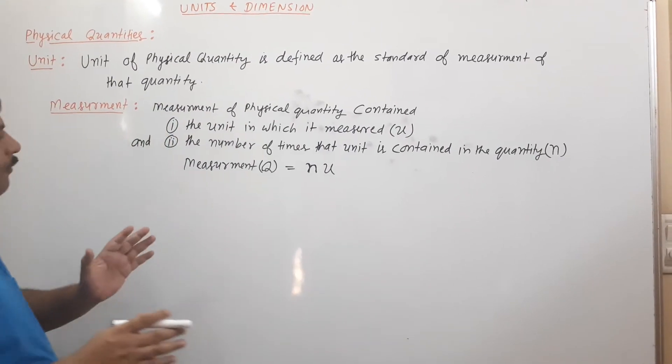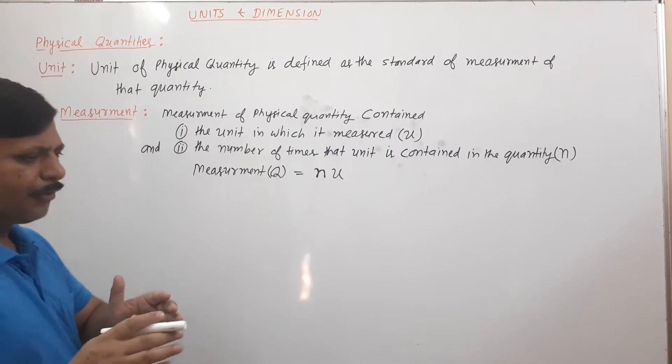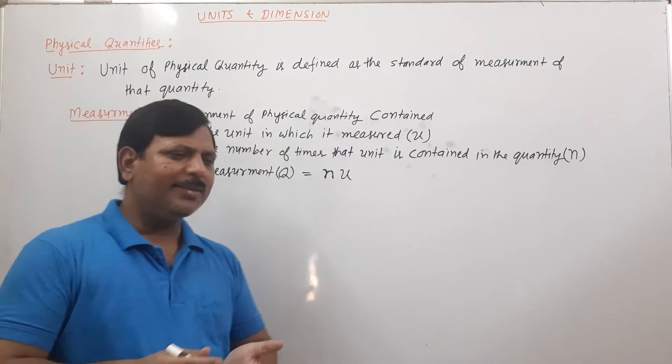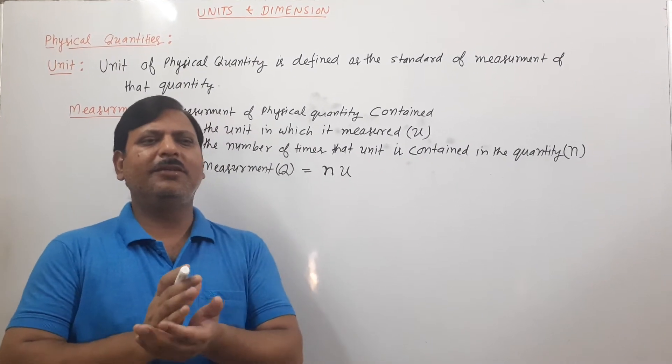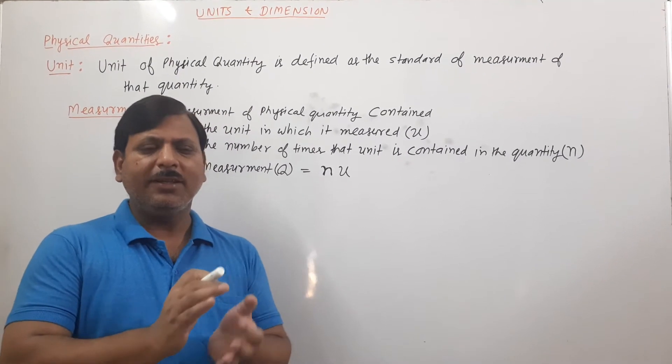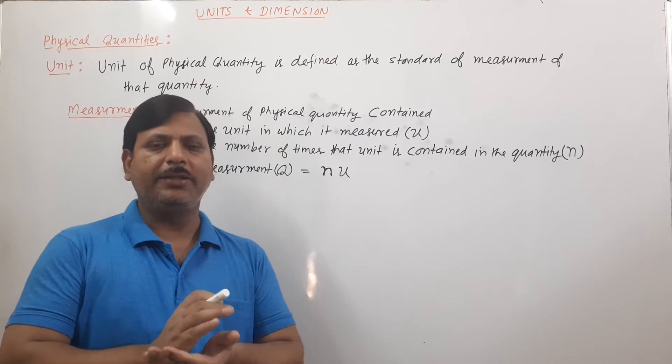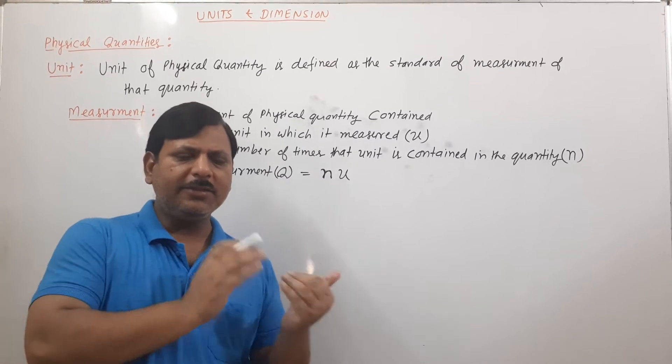When we want to measure anything, there must be one thing — that is a unit. What is a unit? A unit of a physical quantity is defined as the standard of measurement of that quantity.